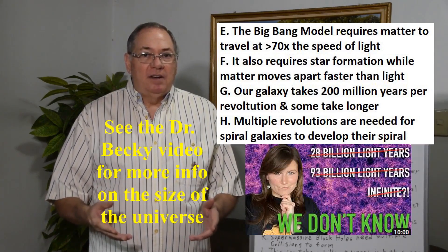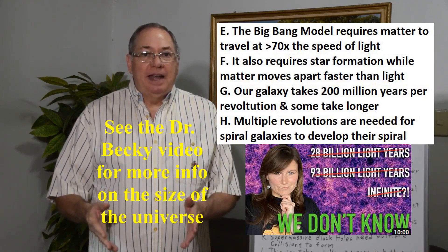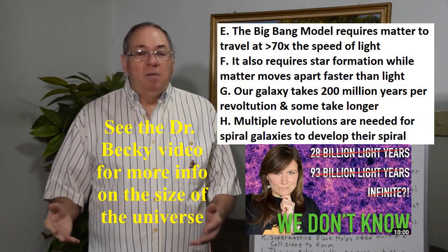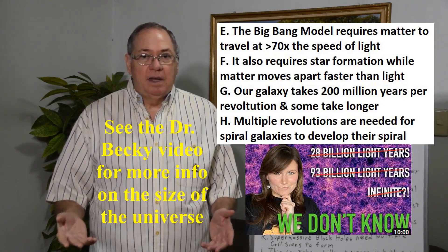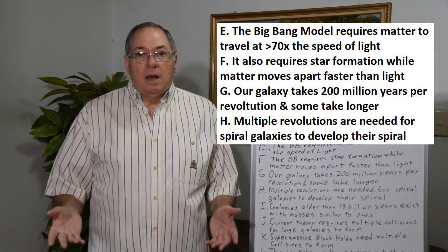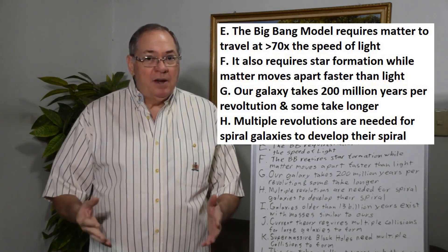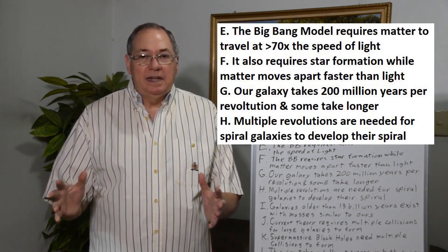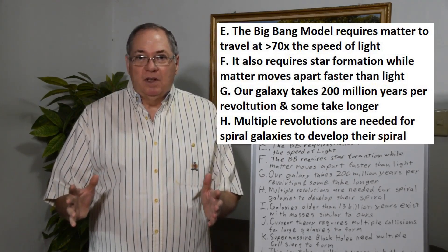And then you have to include the factor that since the 200 million year point, the universe had to expand out to a 93 billion light-year diameter from 28, which still requires more than twice the speed of light. So under the theory, everything is still expanding faster than light. But what isn't explained is if all the matter is moving away faster than light and causing matter to constantly expand at a very high rate, gravity is not strong enough to cause stars to form.